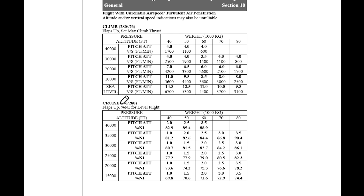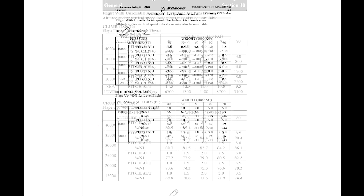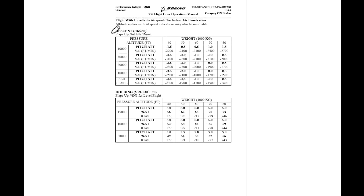Then we have the cruise table: max 7.6, 280 knots, flaps up, percent N1 for level flight. It goes from 15,000 to 40,000 feet. And then you can see the table for descent: max 7.6, 280 knots, flaps up, set idle thrust.